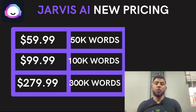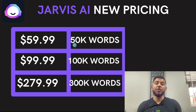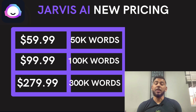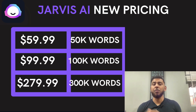Here's how the new boss mode pricing models work. For $59.99 per month you get 50,000 words generated; if you go over, you may be charged overage fees. For $99 per month you have access to 100,000 words. For $279 per month you have access to 300,000 words. There are also bigger plans available if you need more.